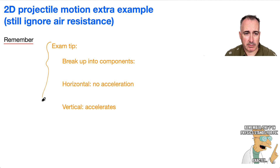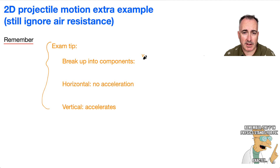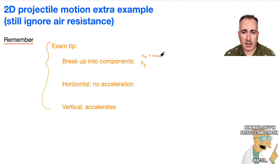First step — exam tips here. What we need to do is break things up into components. Remember, we need to find Vx and Vy. Vx is V cosine theta, and Vy is V sine theta. That's in general.